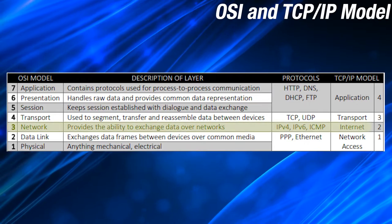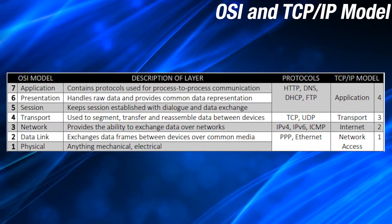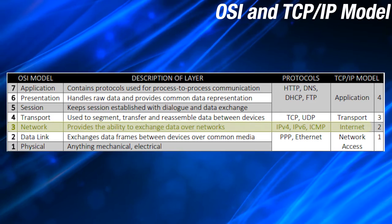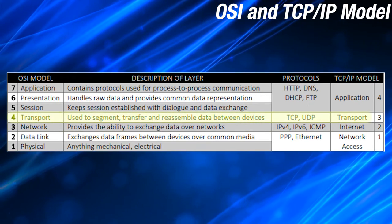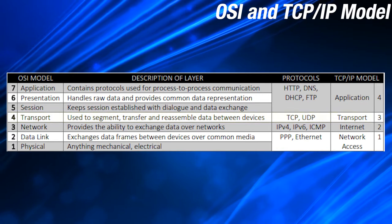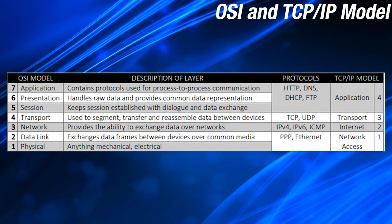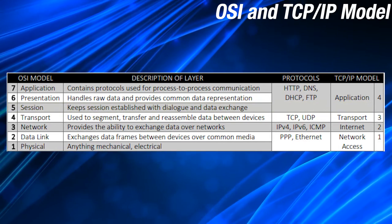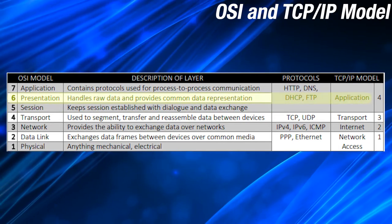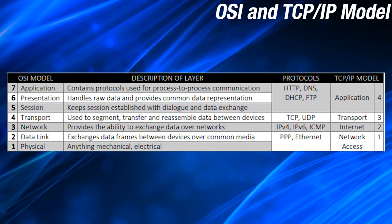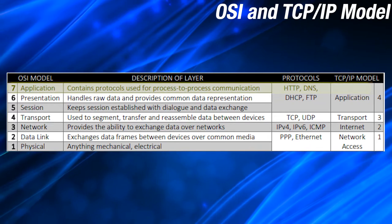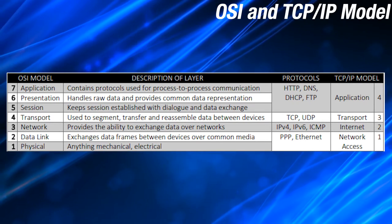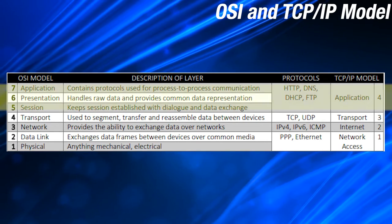The network layer is where data is exchanged over the networks, including protocols like IPv4, IPv6, and ICMP. In the TCP/IP model, this is the internet layer. The transport layer is used to fragment, transfer, and assemble data between hosts, and includes protocols like TCP and UDP. The session layer keeps sessions alive and works with data exchange. The presentation layer handles incoming encoded data and decodes it. The application layer is where end users interact. The session, presentation, and application layers deal with protocols like HTTP, DNS, DHCP, and FTP. In the TCP/IP model, they're all combined into the application layer.